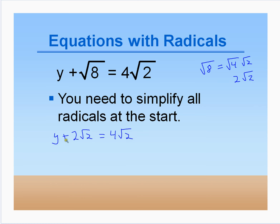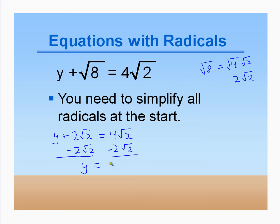To solve for y, since 2√2 is added to it, we subtract 2√2 from both sides. We get 4√2 − 2√2, which is 2√2. So y = 2√2.